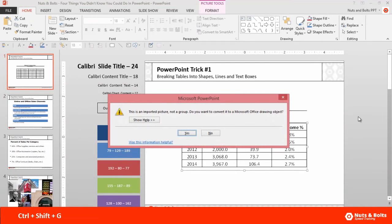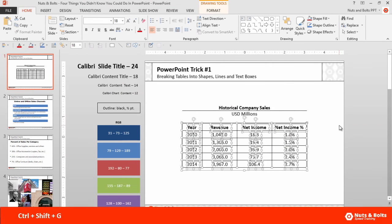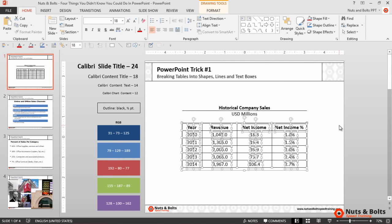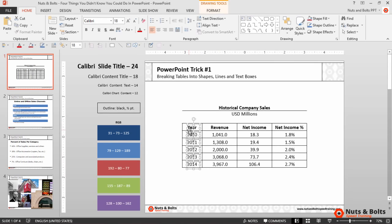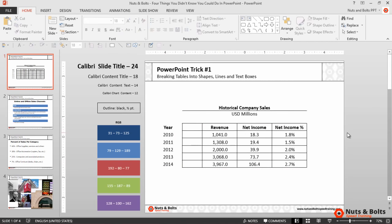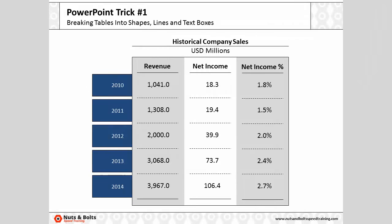Ctrl+Shift+G once, select Yes in the dialog that opens, then Ctrl+Shift+G a second time, and the entire table has been broken into shapes, lines, and text boxes. From here you can simply select the information you want and begin to move it around on your slide to build out something like this. That's breaking the table.